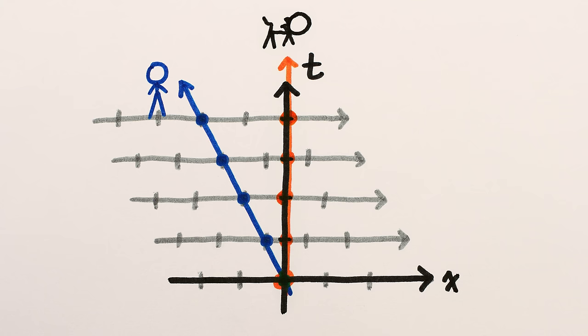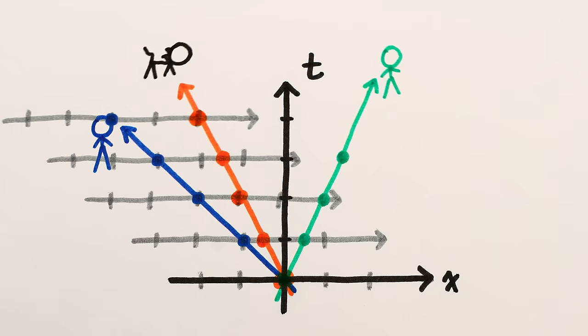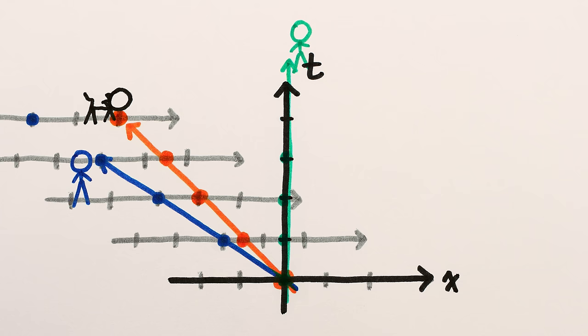It works for other speeds, too. If we want the perspective of somebody who's going a meter per second to the right relative to the cat, we can slide the snapshots over even farther. And now the cat's going a meter per second to the left, and I'm going a meter and a half per second to the left. And of course, we can slide back to my perspective, from which the newcomer is going a meter and a half per second to the right.